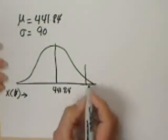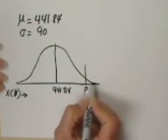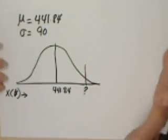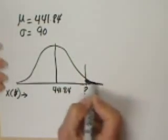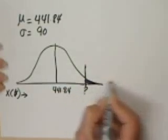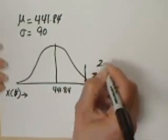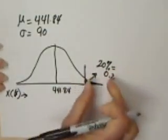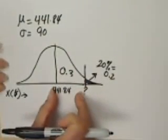We want to know what is that x value or that dollar amount that amounts to being the marker for the 20% top earners. So that means that we're looking for that point on the x-axis where the area to the right of that point under the curve is 20% or 0.2. If that's 0.2, then this white strip right here is 0.3.